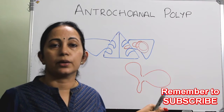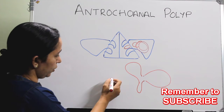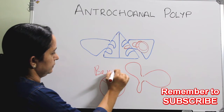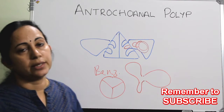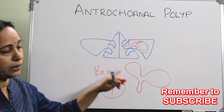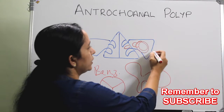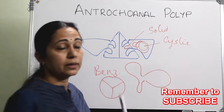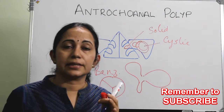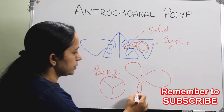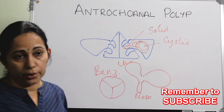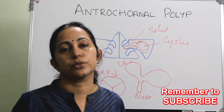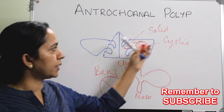An antrochoanal polyp has three parts: an antral part, a small nasal part, and a large choanal part. It can be compared to a bowtie or bent structure — a trilobular structure. It also has a solid component and a cystic component. The part mostly inside the maxillary sinus is cystic, and the part going into the nose and choana is usually solid.